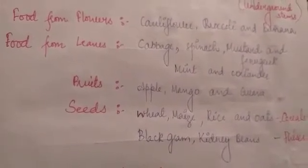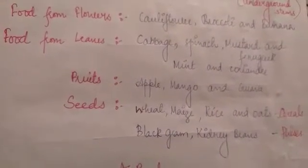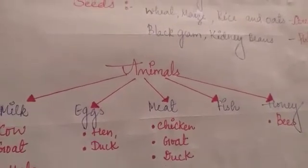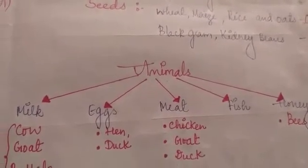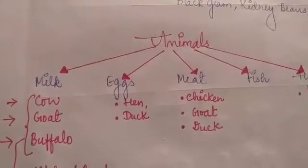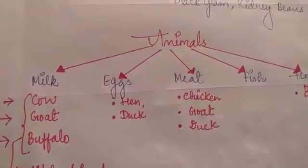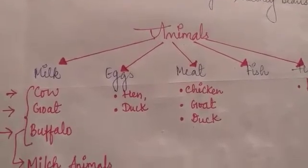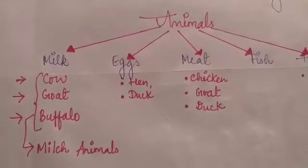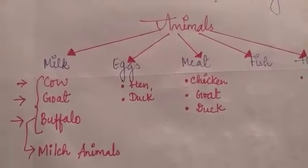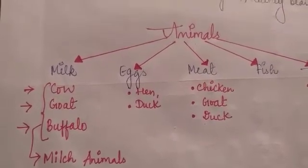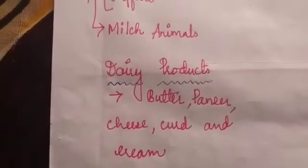Next we move to food from animals: milk, egg, meat, fish and honey — these all we get from animals. We get milk from cow, goat and buffalo, so these animals are commonly called milch animals, meaning animals which give us milk. There are also other products from milk called dairy products, like butter, paneer, cheese, curd and cream.